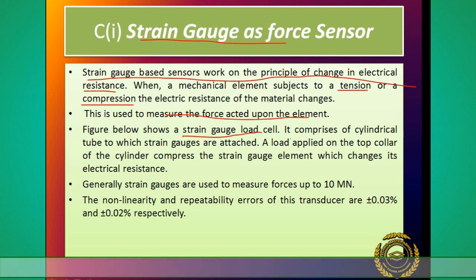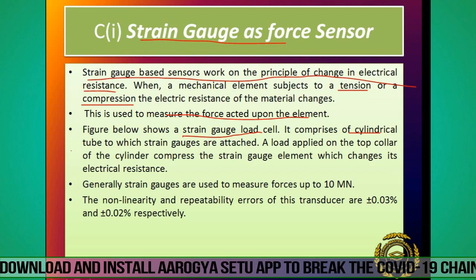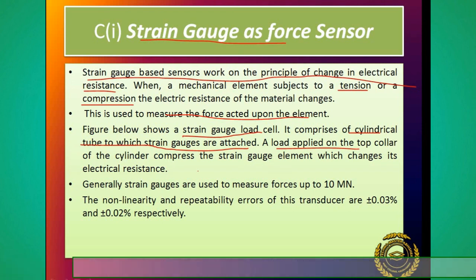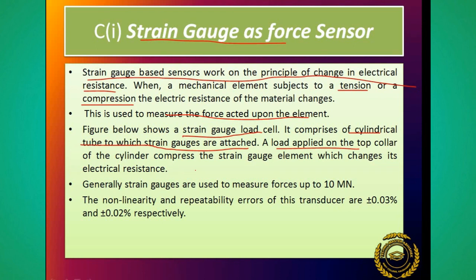The strain gauge load cell comprises a cylindrical tube to which strain gauges are attached. उस cylindrical tube में हम strain gauges को attach कर देते हैं। फिर एक load apply करेंगे top collar पे cylinder के - और ऊपर से load apply करने पर compressive force होगा, cylinder compress करेगा। जब compress करेगा तो जो strain gauge element उसमें लगा होगा, उसका electrical resistance change होगा।